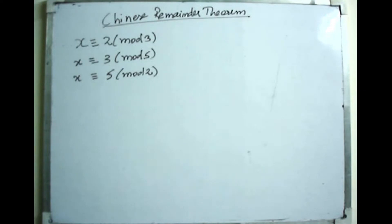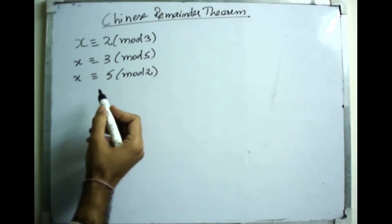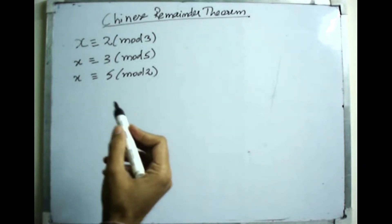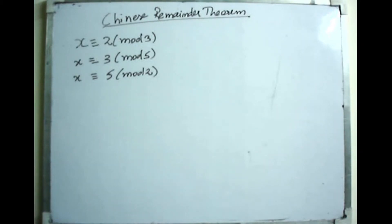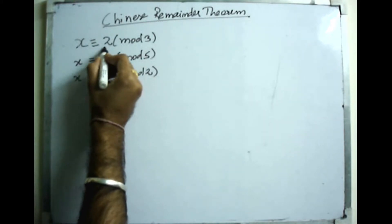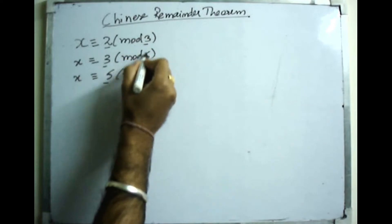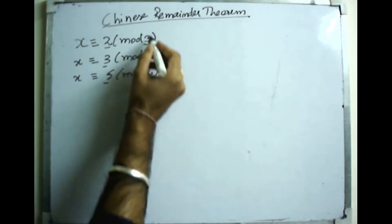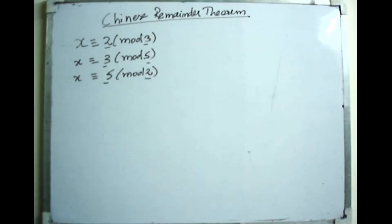Greetings dear students. In this video we will see how to use the Chinese Remainder Theorem to solve a system of linear congruences. We have taken three linear congruences and will find a simultaneous solution satisfying all of them. Here a1, a2, a3 and n1, n2, n3 are as shown, and n1, n2, n3 are relatively prime, so we can apply the Chinese Remainder Theorem.